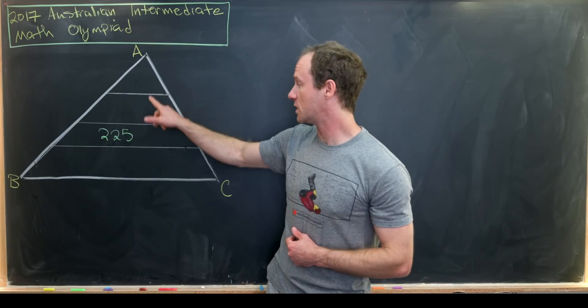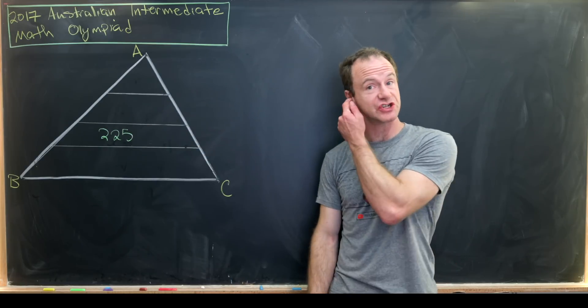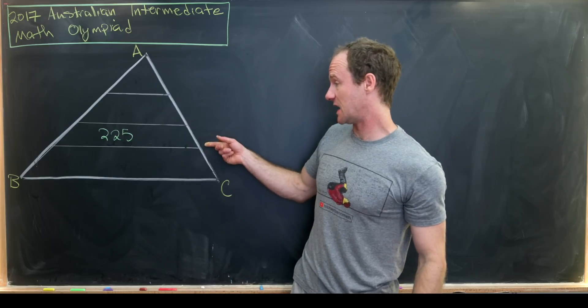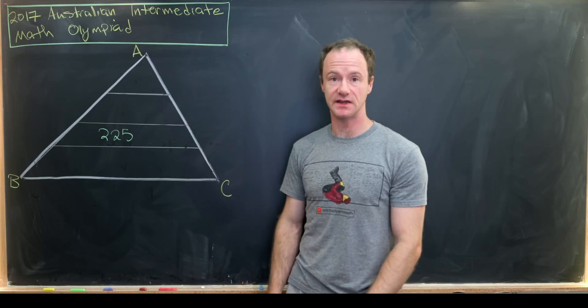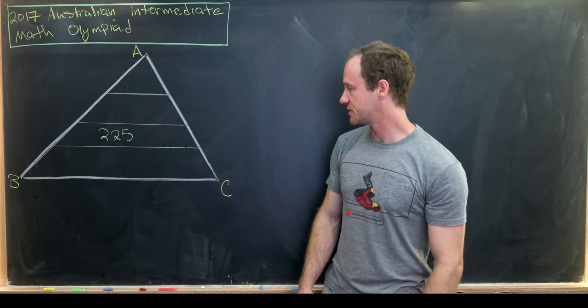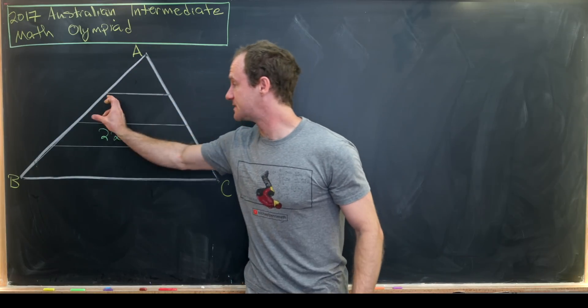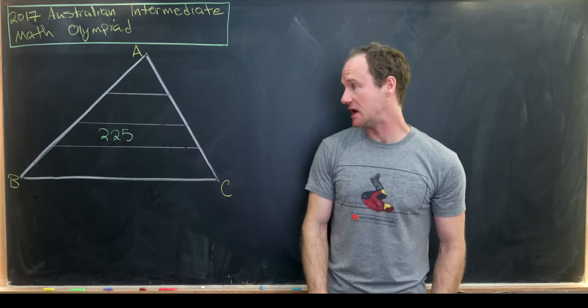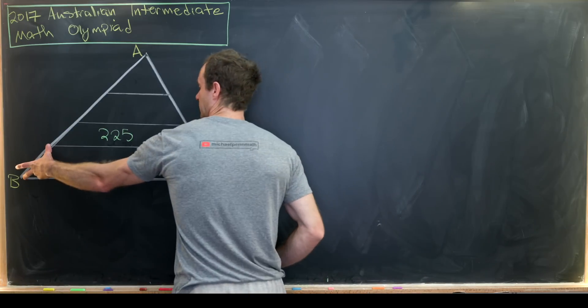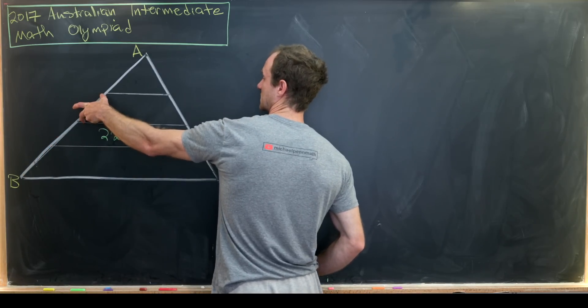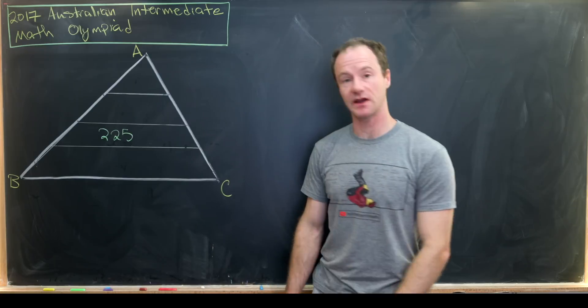It's been divided into one, two, three, four regions by these lines that are parallel to BC. And even though my picture isn't perfect, we want to consider these equally spacing line segment AB. So that means this length right here should be the same as this length, which is the same as this length, which is the same as this length.